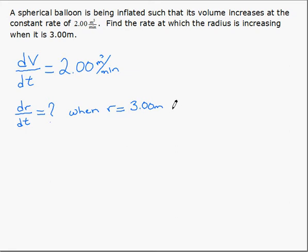Now we need an equation that relates the volume to the radius, and then we differentiate both sides with respect to time. For a sphere, the volume is equal to 4/3 pi r cubed.